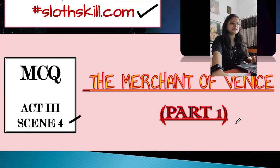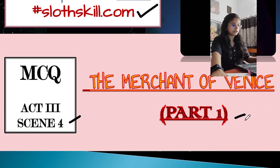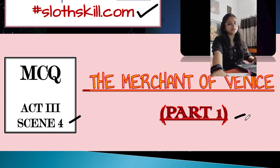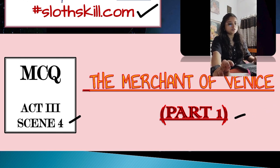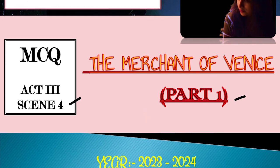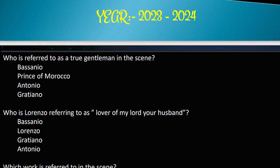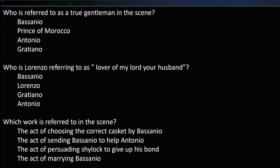Today we are doing Act 3 Scene 4, Part 1. It is a slightly bigger one than Act 3 Scene 3. Act 3 Scene 3 had only one MCQ series, while Act 3 Scene 4 has two parts — this is the first part and another one you will get in the next class. So without any more delay, let us begin. The first question: who is referred to as a true gentleman in this scene?